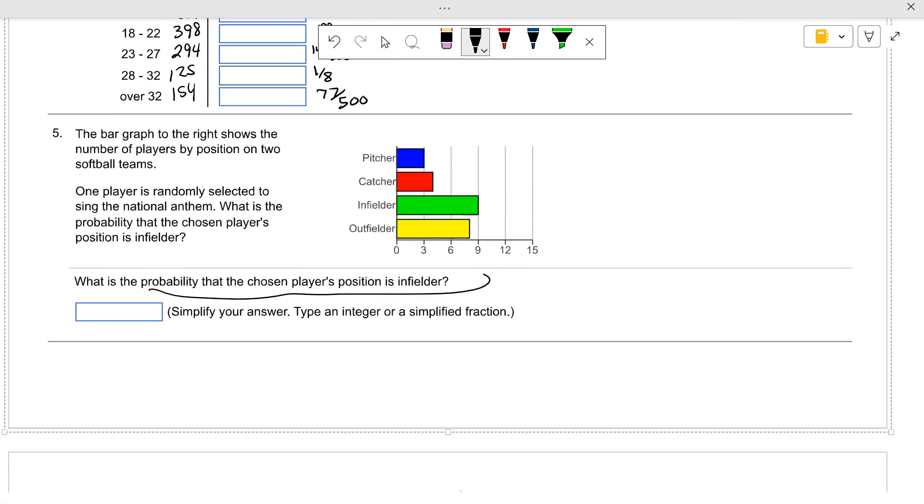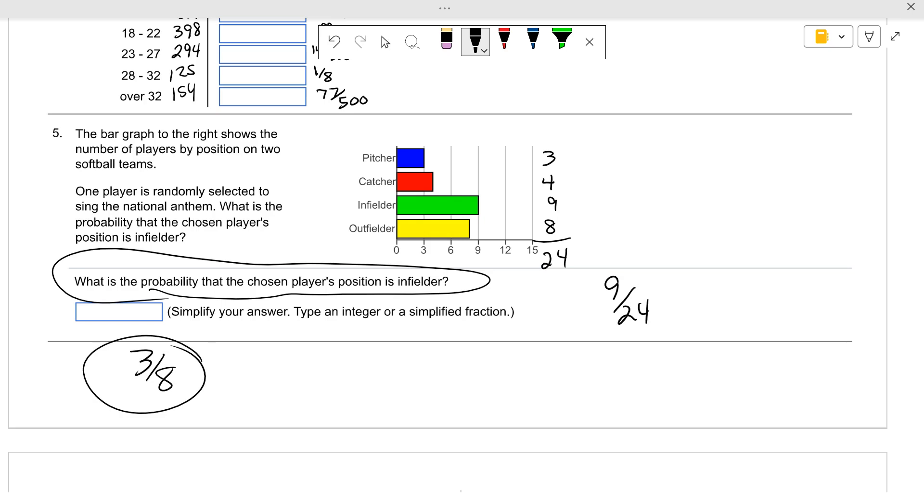What's the probability that a chosen player is an infielder? So in this case one player is randomly selected to sing the national anthem. You wouldn't want to select me to sing the national anthem, that's for sure. What's the probability that it's an infielder that's chosen? Well, you add all of them up. There are 3 pitchers, 4 catchers, 9 infielders, and 8 outfielders. Add them up. There's 24 total players. The probability of being an infielder is 9 out of 24. If you divide them both by 3, there's a 3 out of 8 chance that an infielder will have to sing the national anthem.